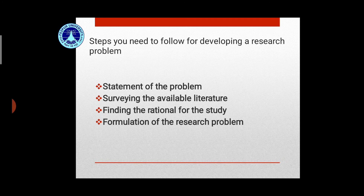Thirdly, finding the rationale for the study. After the extensive literature review, you need to establish the logical arguments for why this particular issue needs to be studied. In other words, in formulating the research problem, you have to find out the reasons for selecting a research problem, justifying its scope of contributing to the existing knowledge. Fourthly, formulation of the research problem. This final stage requires rephrasing the research problem into a proposition which is feasible to execute. This process includes defining the research problem in terms of operational and analytical terms that will give you a lens to study the phenomenon under study. This formulation needs to identify the appropriate theoretical or conceptual framework which gives an idea to analyze the phenomenon using such theories or concepts.